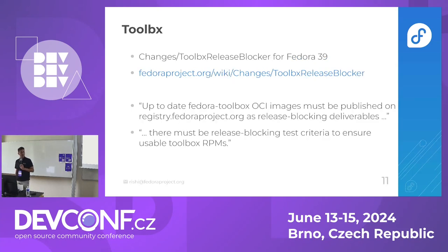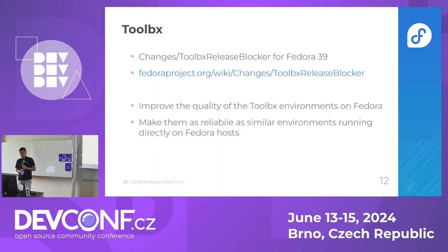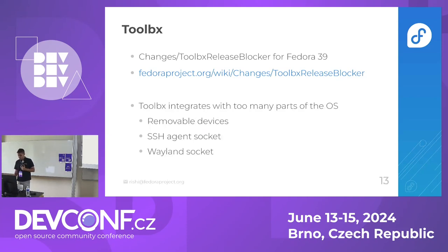There was a big change for Fedora 39. The idea is to improve the quality of the toolbox environments on Fedora and make them as good, reliable, and stable as running Bash directly on the host. The problem is that Toolbox integrates with too many parts of the OS, so it's vulnerable to changes or bugs anywhere, and it's kind of difficult for a single person or even a small team to keep up with all the changes happening everywhere.